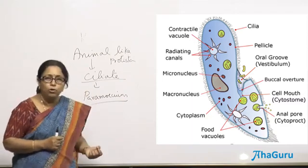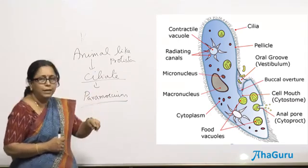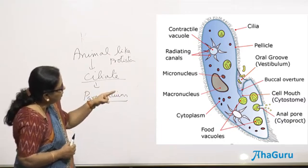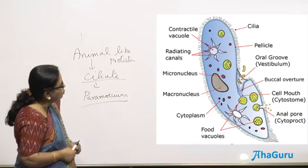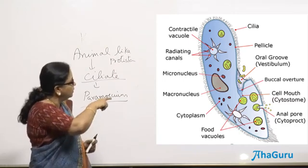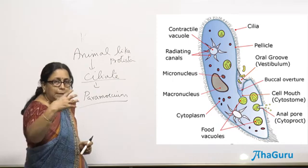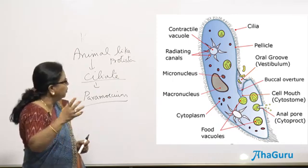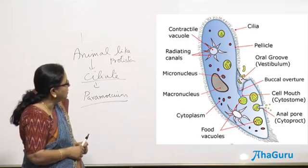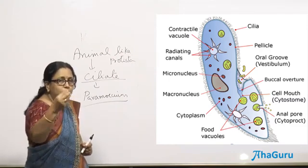One is the bigger nucleus called macronucleus, and a smaller nucleus called micronucleus. Micronucleus helps in reproduction whereas macronucleus is mainly for vegetative characters. It has a cell mouth called cytostome where food enters. It has a contractile vacuole that helps regulate osmotic pressure. It also has pellicles which make it flexible. It has a cell anal pore called cytopyge through which food goes out.